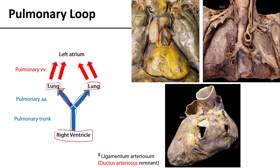Ultimately that blood is destined for the capillary beds of the alveoli, where carbon dioxide can leave the blood and enter the alveoli and exchange with oxygen that enters the blood and is picked up by erythrocytes and hemoglobin. That richly oxygenated blood is then returned back to the left atrium through four pulmonary veins. From the left atrium we then enter back into systemic circulation.